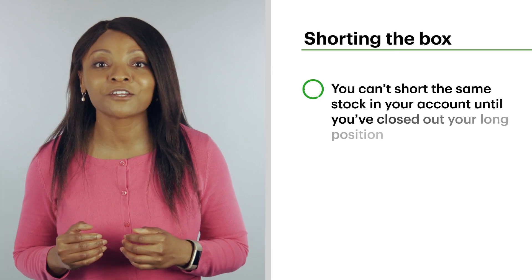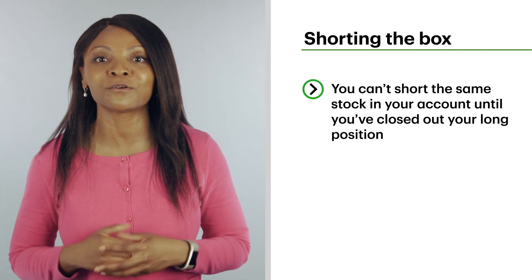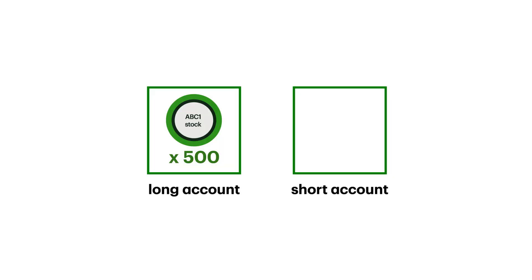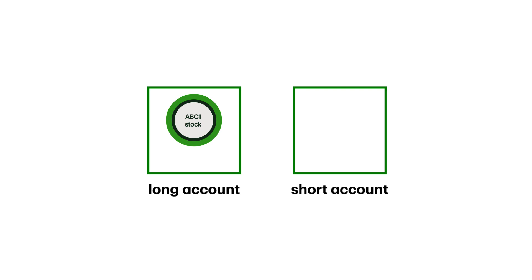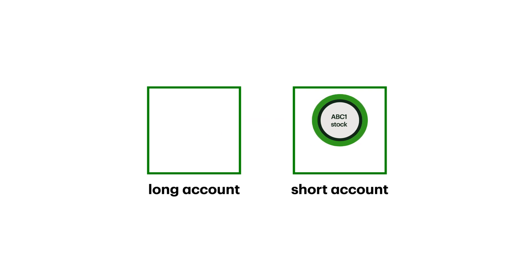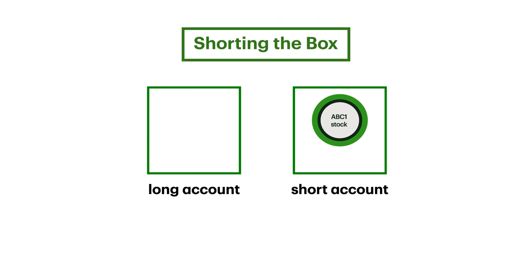Finally, when you hold a stock long in your account, you can't short the same stock until you've closed out your long position. For example, if you have 500 shares of ABC1 on the long side, you're not able to short any shares of ABC1 until you sell that long position first. The reverse also applies — if you're shorting 200 shares of ABC1, you can't go long on that stock until 200 shares are covered first. This practice is called shorting the box. Now you see how short selling can affect your margin account.